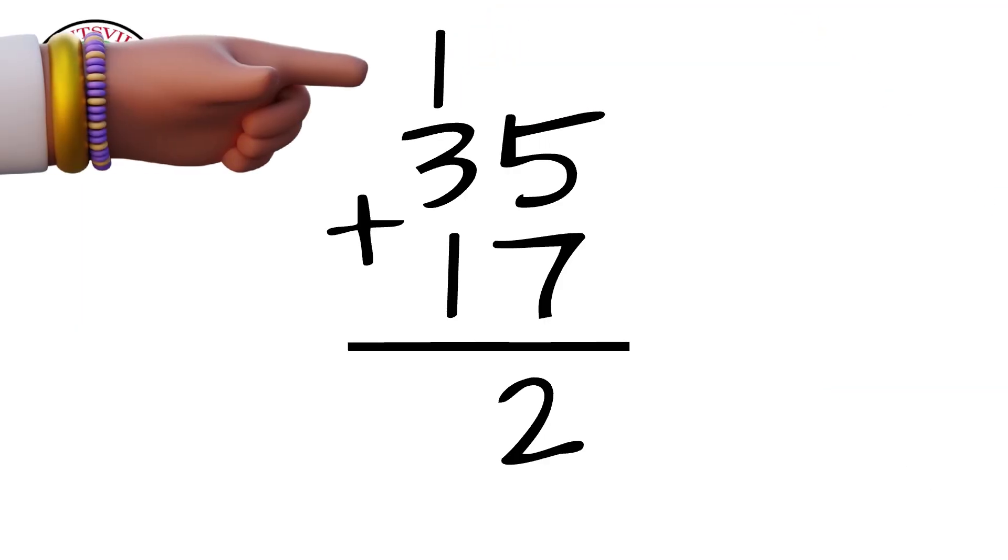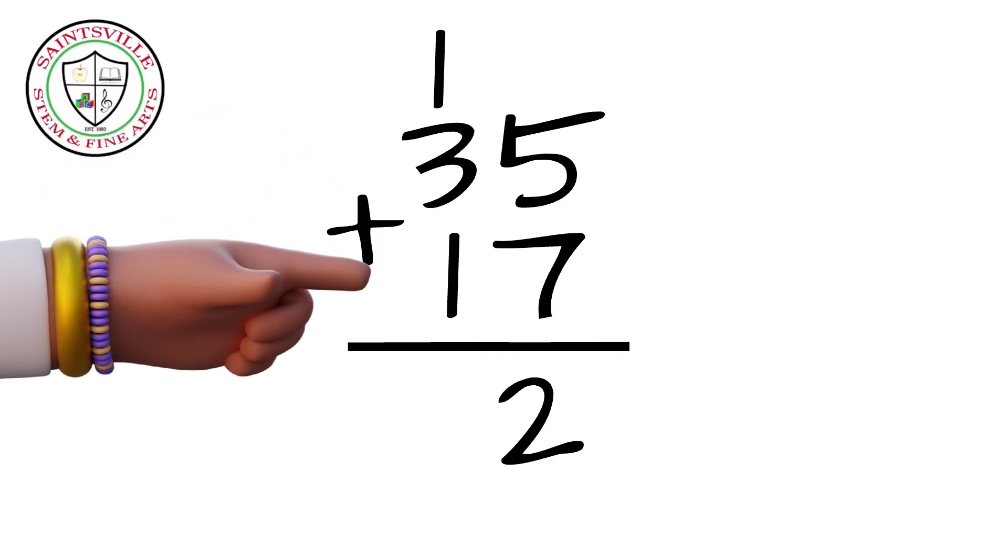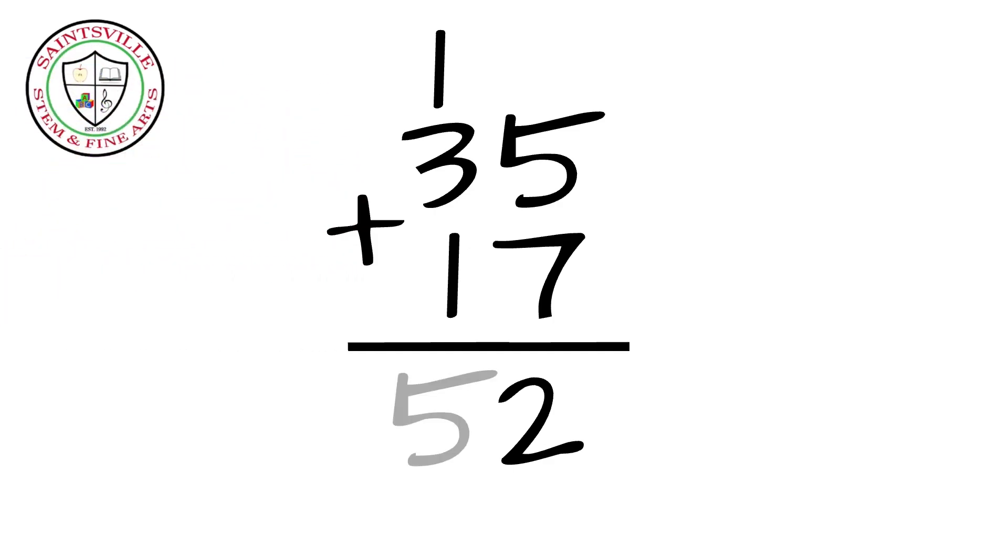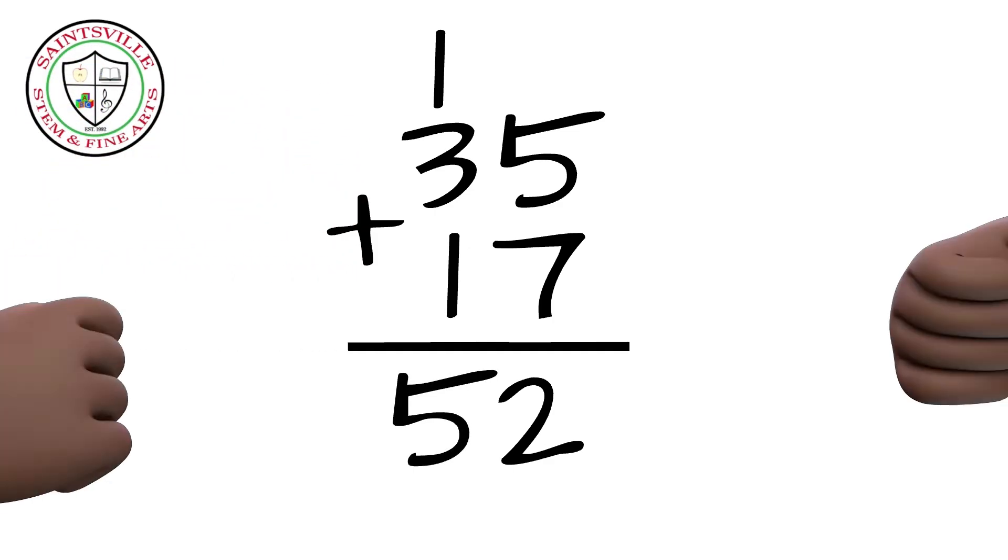Now I add all the numbers in the tens place. 1 plus 3 plus 1 which is 5. Hey, the answer is 52.